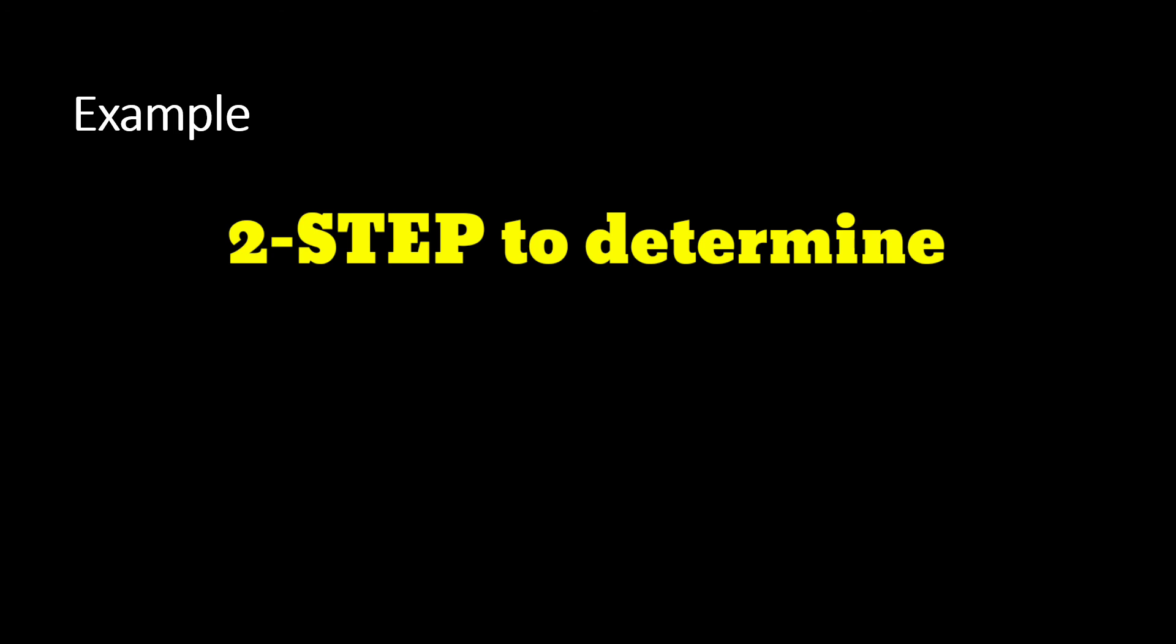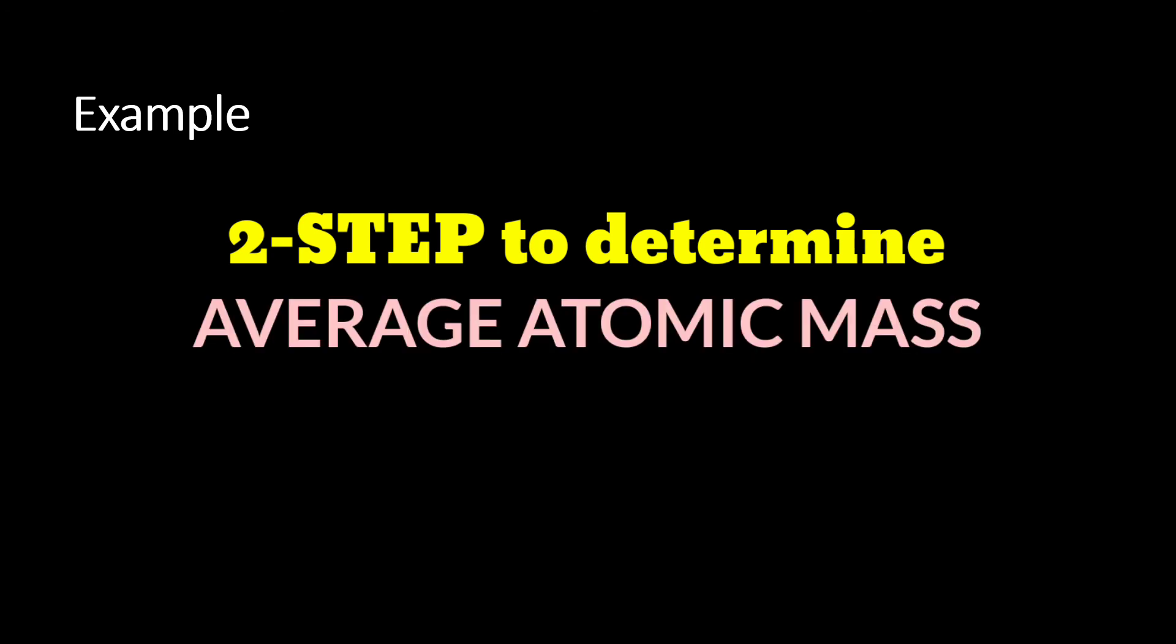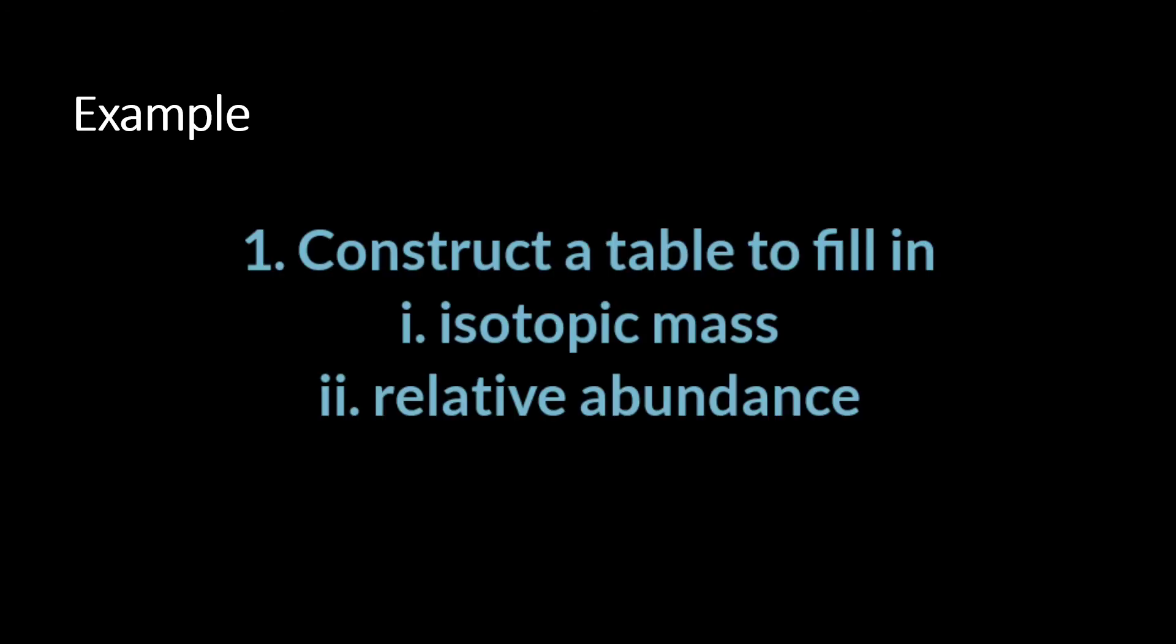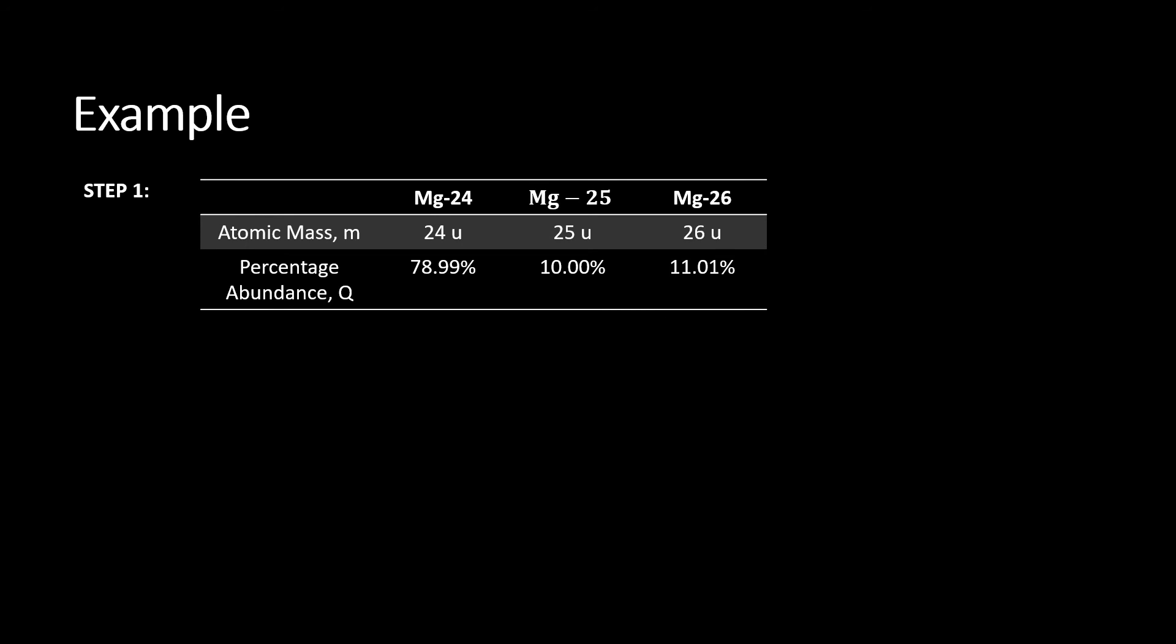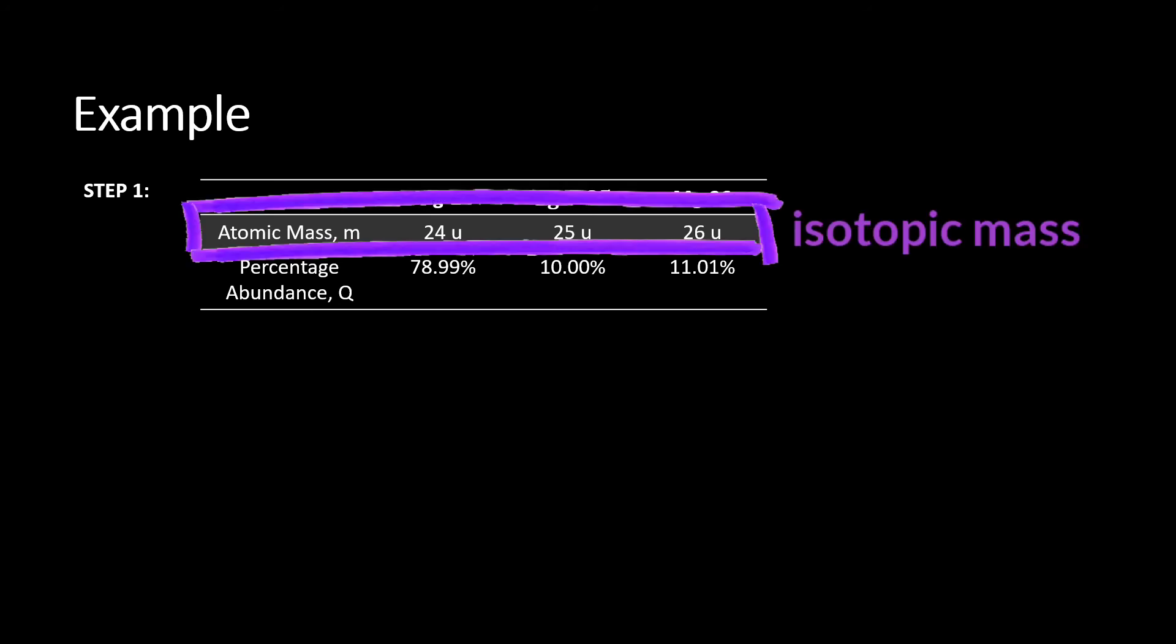Basically, there are two steps to follow through to calculate the average atomic mass of an element. Step number one is to construct a table to fill in information such as isotopic mass for each isotope and also their abundance. For instance, magnesium has three isotopes, magnesium-24, magnesium-25 and magnesium-26. So we must have rows in the table to fill in atomic mass and abundance for each of the isotope.